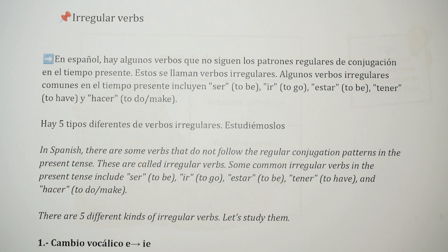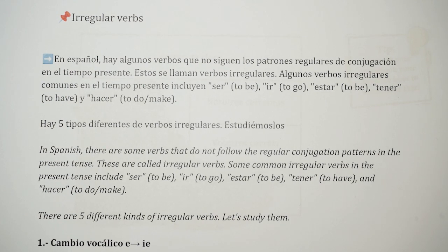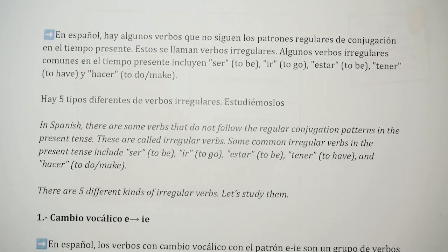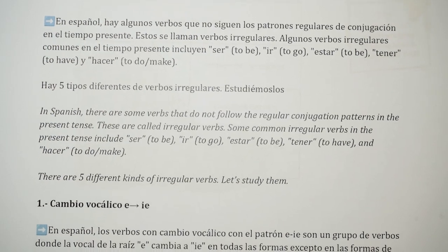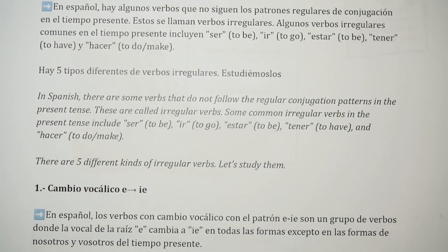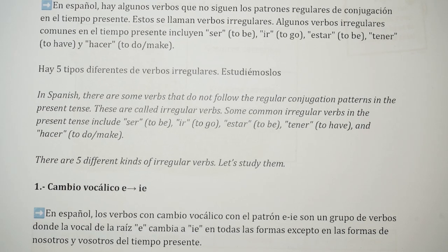In Spanish, there are some verbs that do not follow the regular conjugation patterns in the present tense. These are called irregular verbs. Some common irregular verbs in the present tense include ser, ir, estar, tener, and hacer. There are five different kinds of irregular verbs.